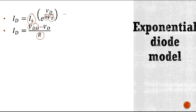So, in these two equations, there are two unknown quantities which are VD and ID, that is diode current and diode voltage.